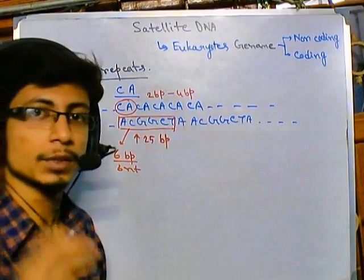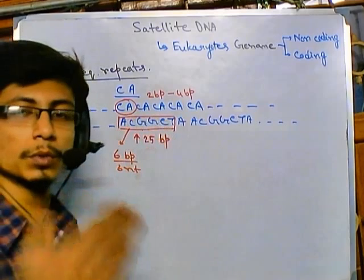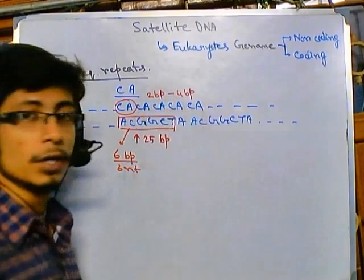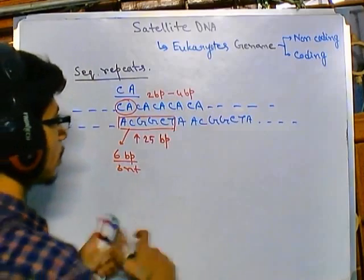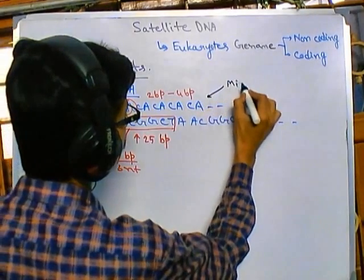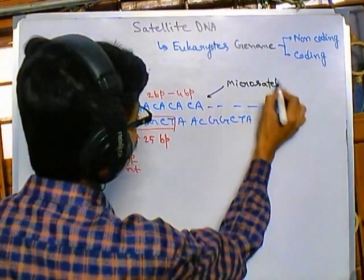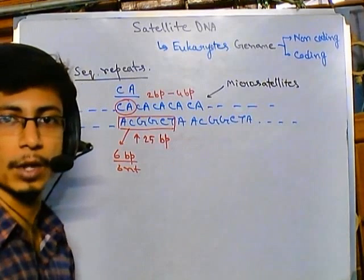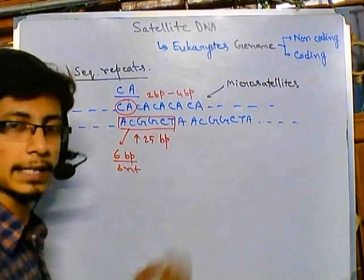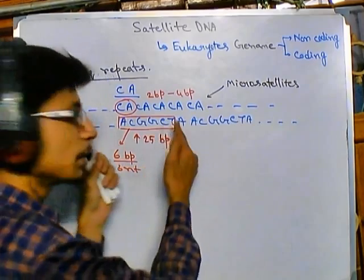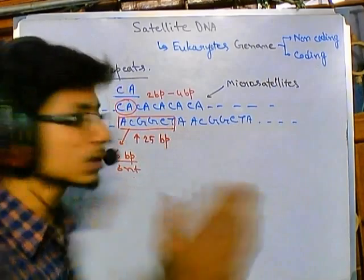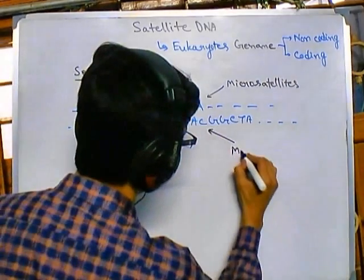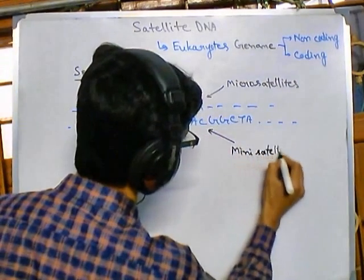There are two major types of repeat sequences. The first type has only two to four nucleotide repeat sequences — these short repeats are called microsatellites. On the other hand, we can have repeat sequences of 20 to 25 base pairs long — these are called minisatellites. They are also a small stretch but compared to microsatellites they are longer.